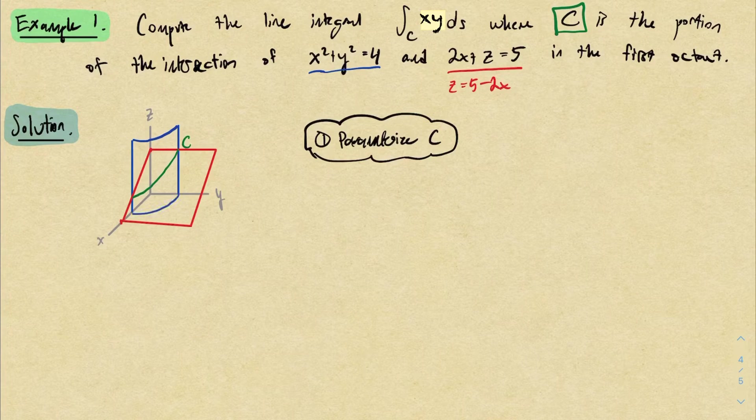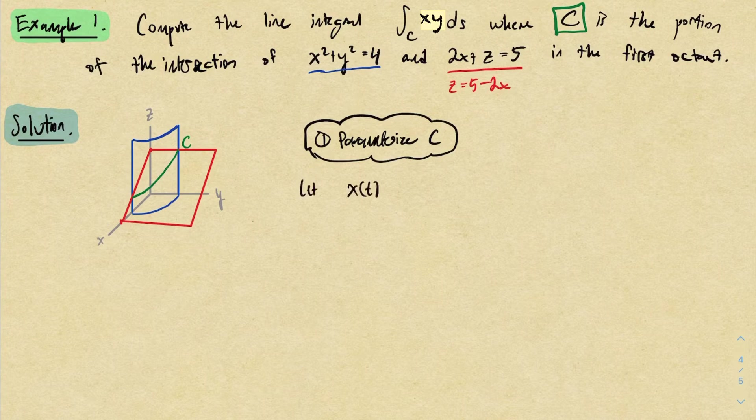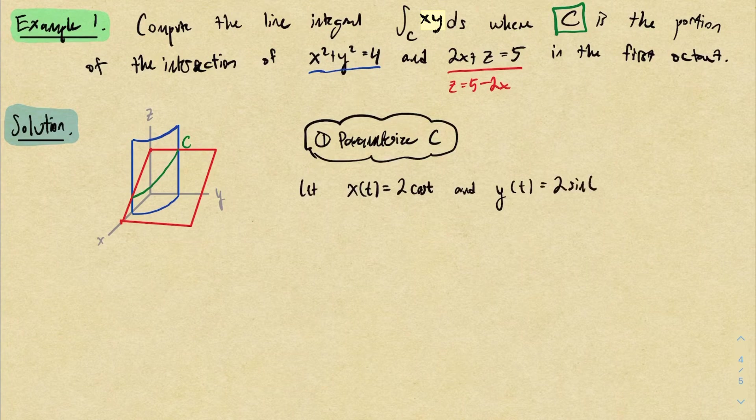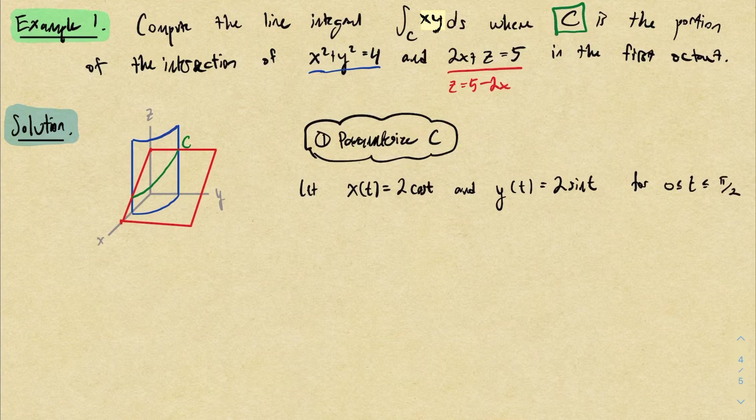I would call x equals 2 cosine t and I would call y equals 2 sine t. And because we're in the first octant, I only care about this circle in the first quadrant, which means t I need to restrict from 0 to pi over 2.